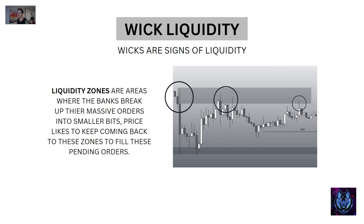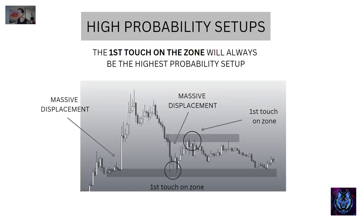Wick liquidity: wicks are a sign of liquidity in the market and help us discover where banks and institutions are playing. We want to be on the banks' side when they enter the market. Quality zones are areas where banks break their orders into smaller pieces, and price likes to keep coming back to fill those orders. The first touch on a zone will always be the highest probability — it will produce a stronger reaction than the second or third touch.